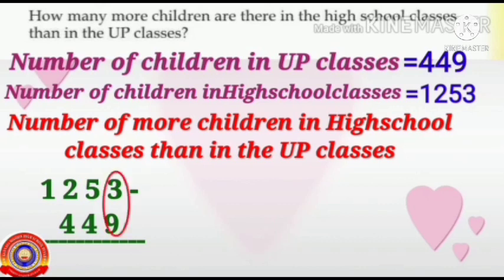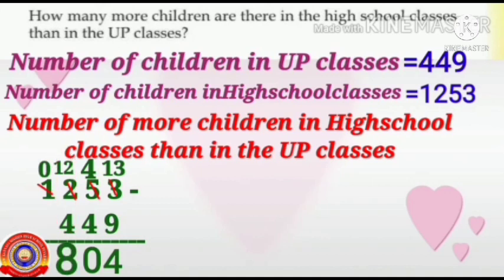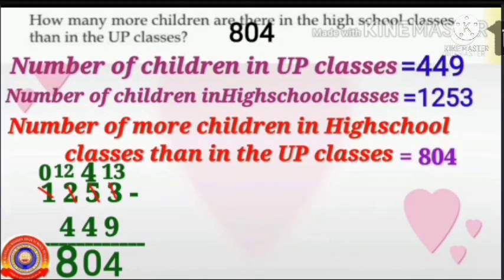Subtraction of 9 from 3 is not possible. So, borrow 1 from 5, then 3 becomes 13 and 5 becomes 4. 13 minus 9 is 4. 4 minus 4 is 0. We can't subtract 4 from 2, so borrow 1 from 1, then 2 becomes 12 and 1 becomes 0. 12 minus 4 is 8. The result is 804. So, how many more children are there in the high school classes than in the UP classes? 804.